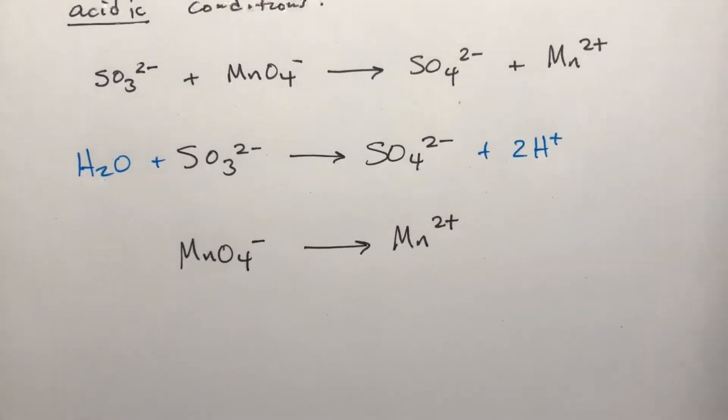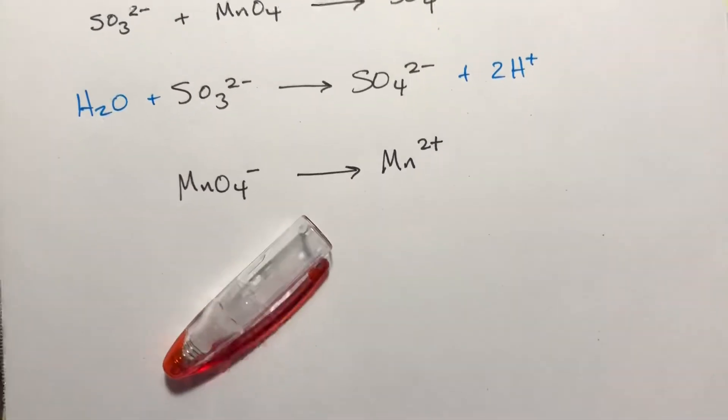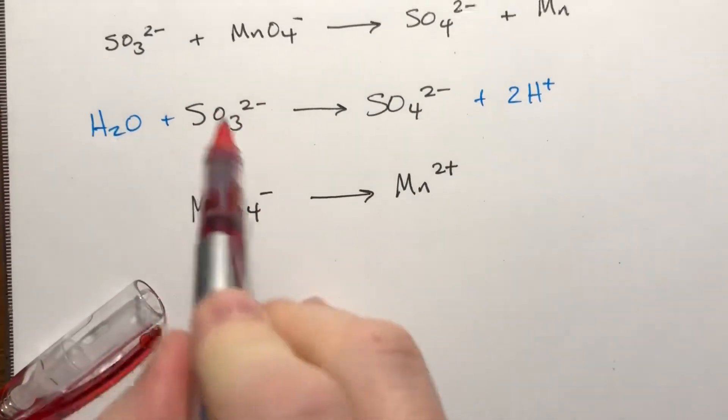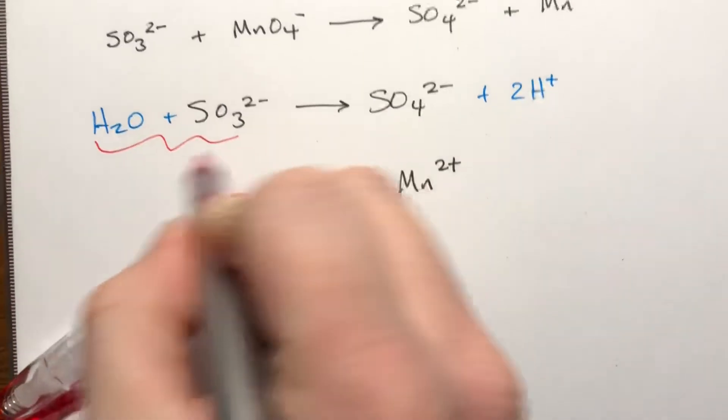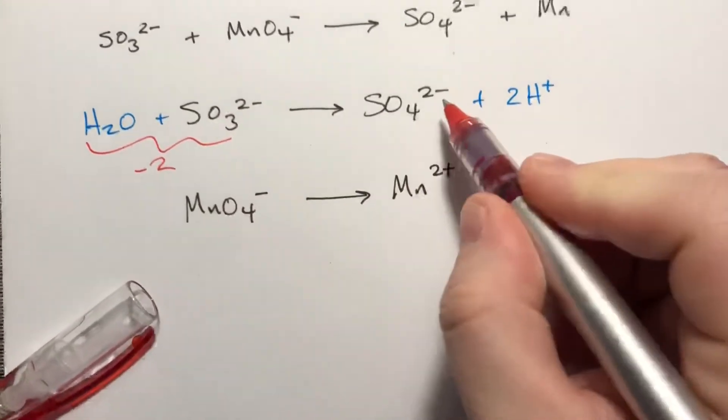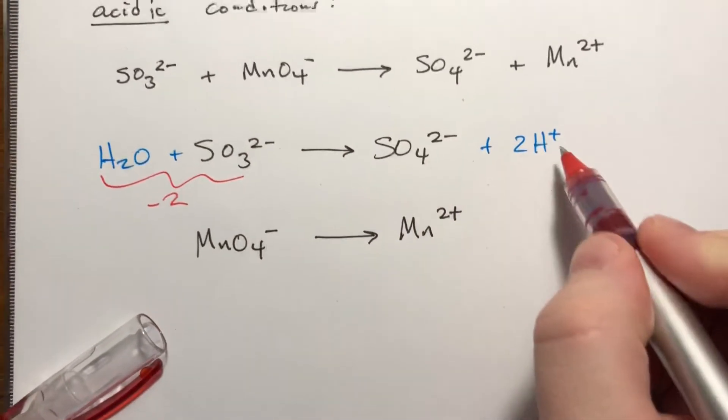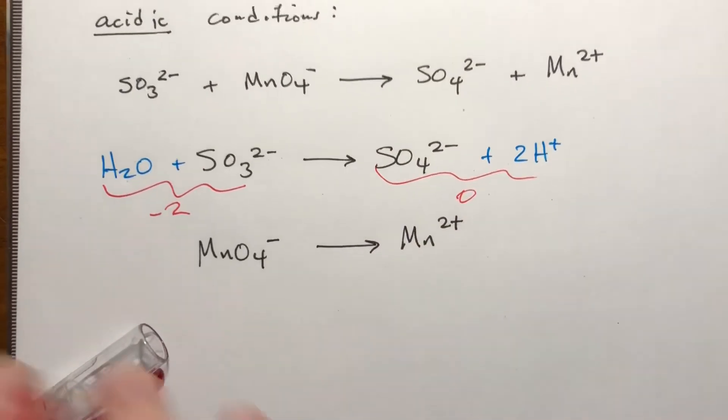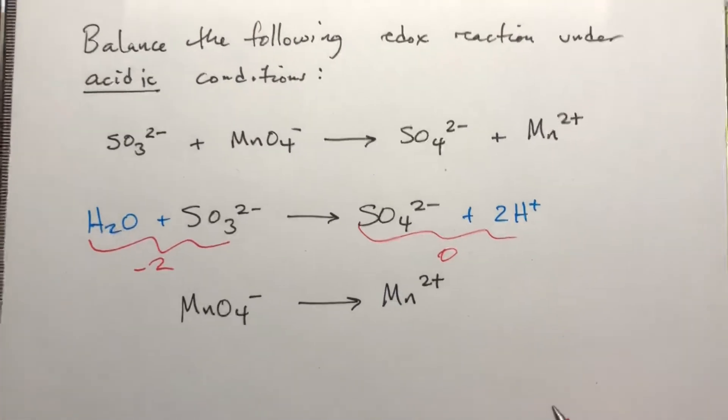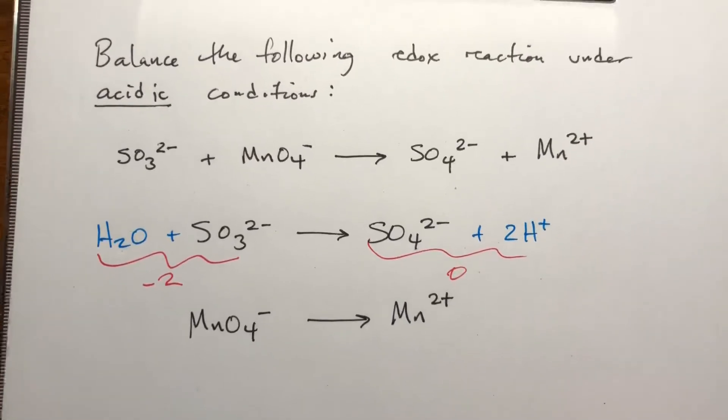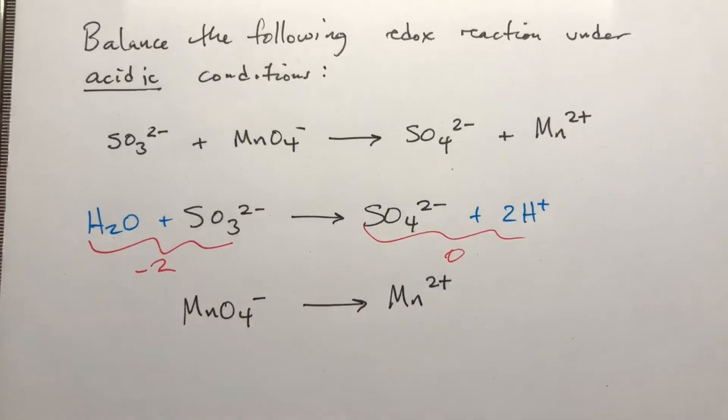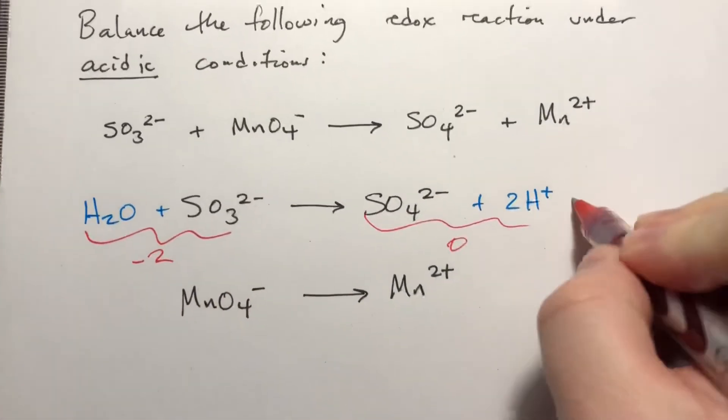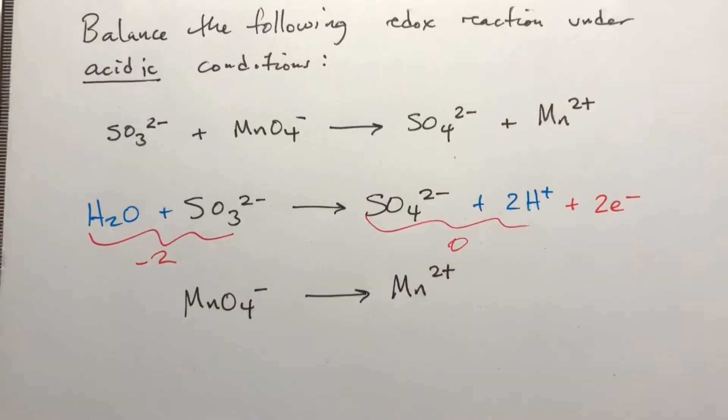The last part of this is to make the charges balance out. So on this side we have an overall, this is zero, this is minus two, this is overall minus two, and over here we have minus two and plus two, so this is zero. We need the charges to balance, which means we're going to add electrons to whichever side is more positive until they're the same. The sides don't have to come out to be zero, they just have to be the same. So since this is negative two and this is zero, we're gonna add two electrons to that side.